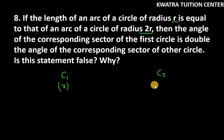The first circle of radius is r and the second circle of radius is 2r. This is given to us, and the length of arc is equal.